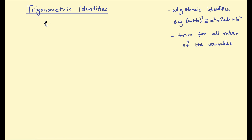A common one would be: tan of theta equals the sine of theta over the cosine of theta. You can plug in any value of theta into this identity and it will be true, except for some values. Can you think of some values of theta where this would be undefined? That would be where cosine of theta equals zero — so 90 degrees, 270 degrees, 450 degrees, etc.